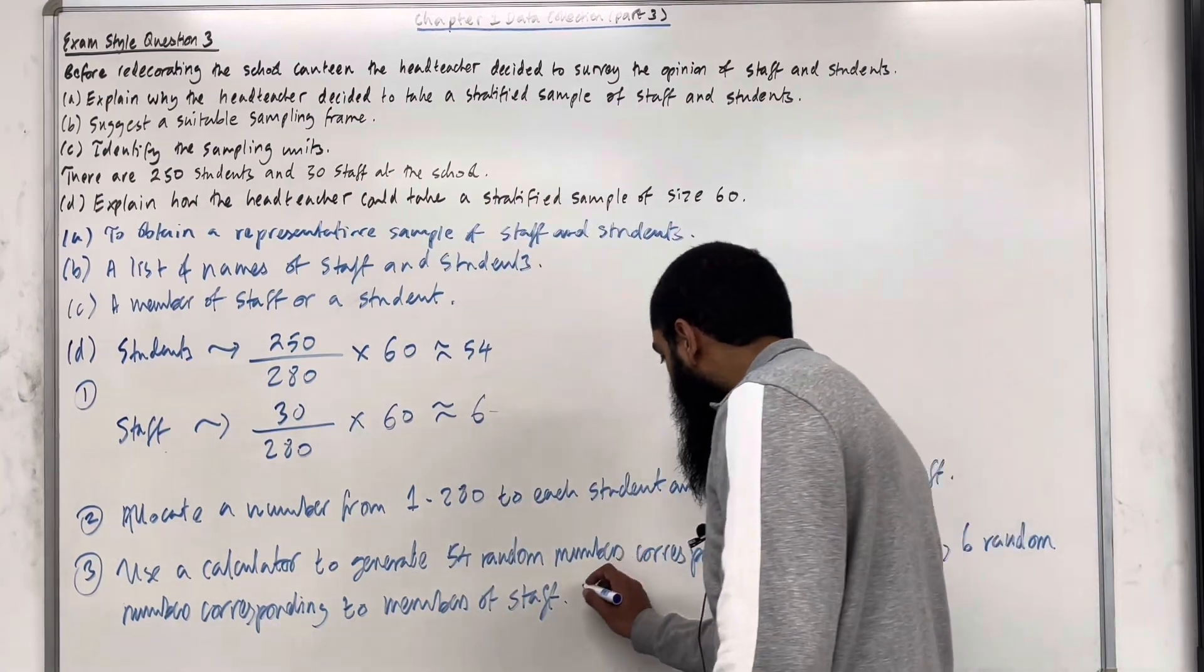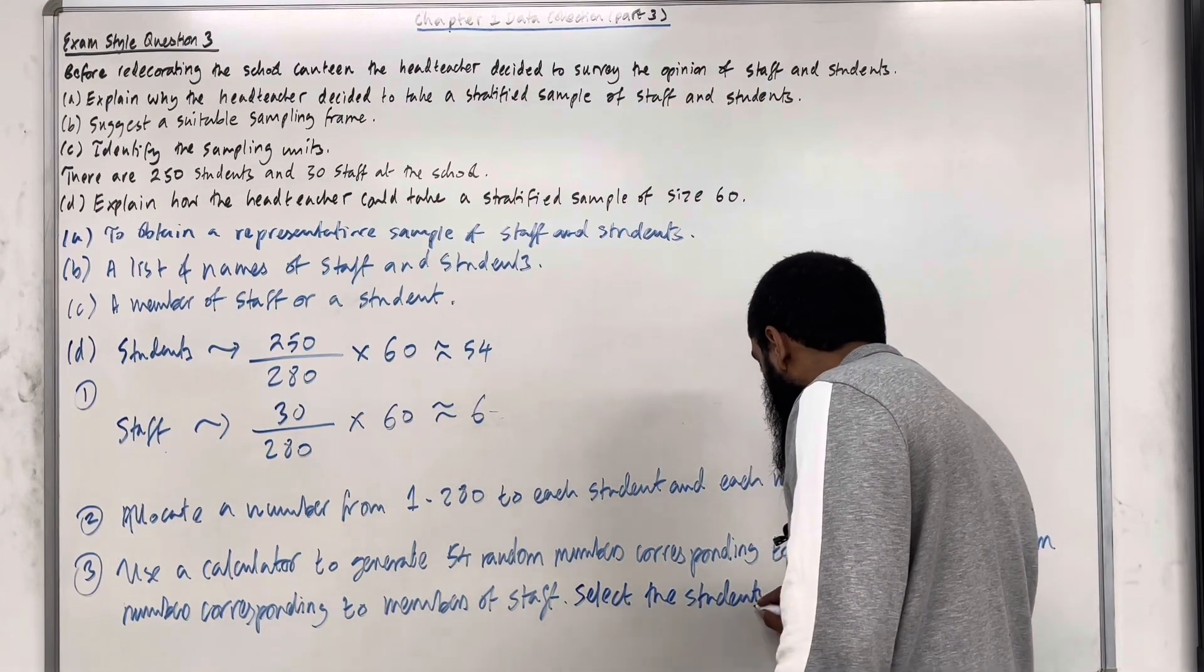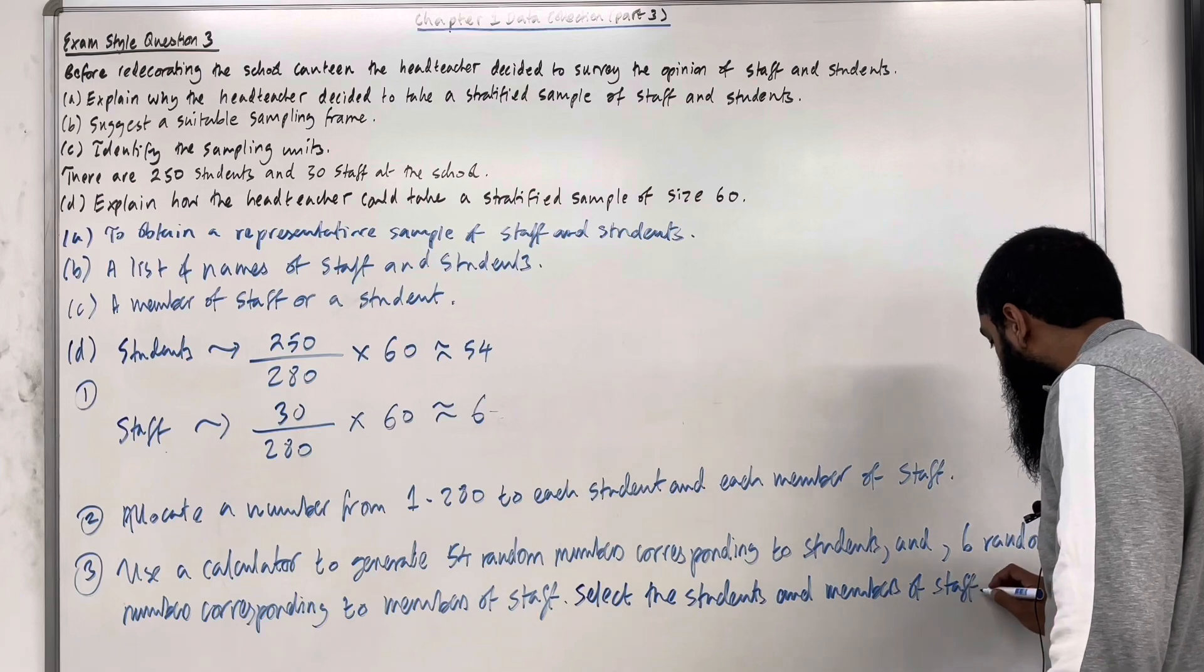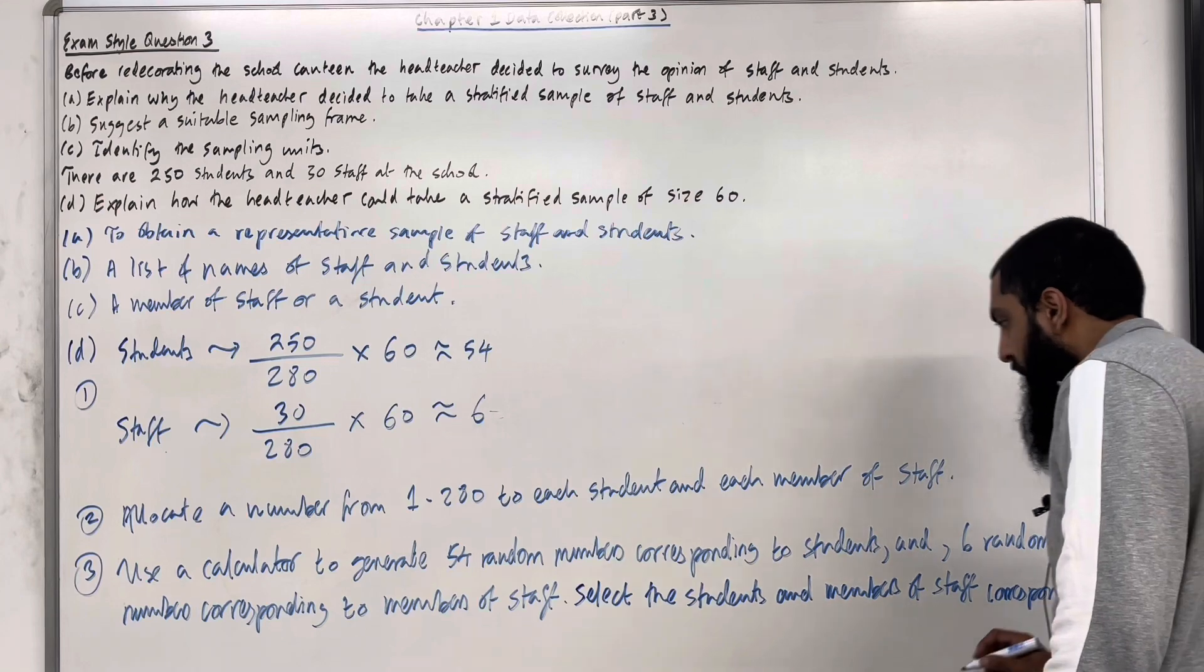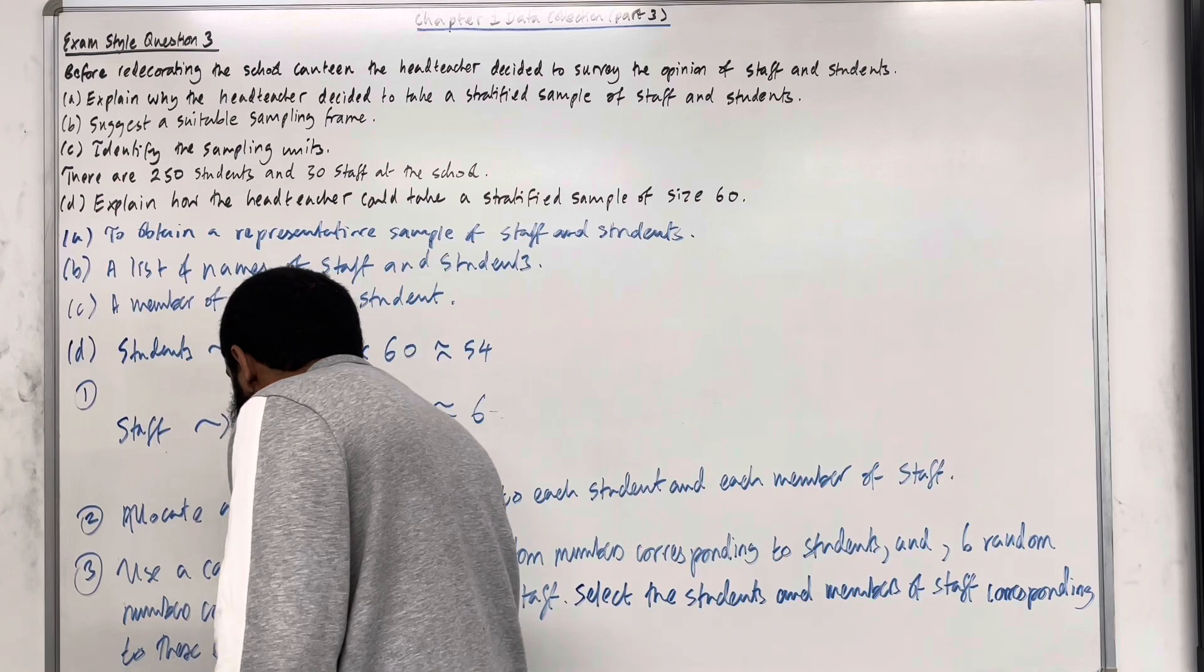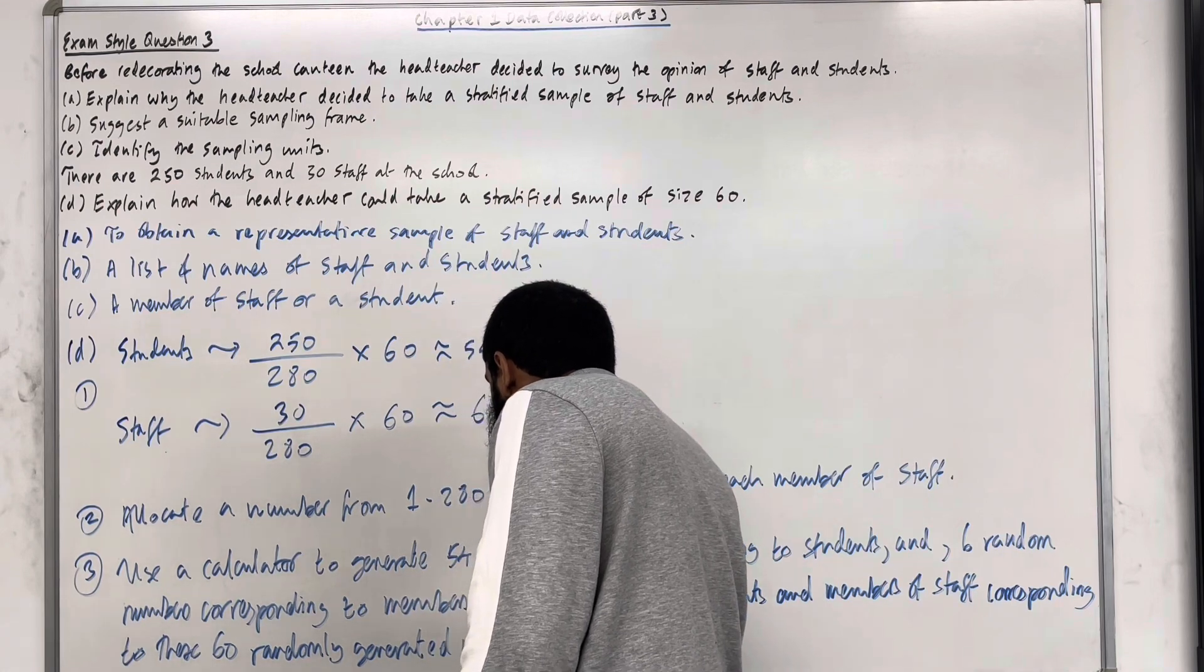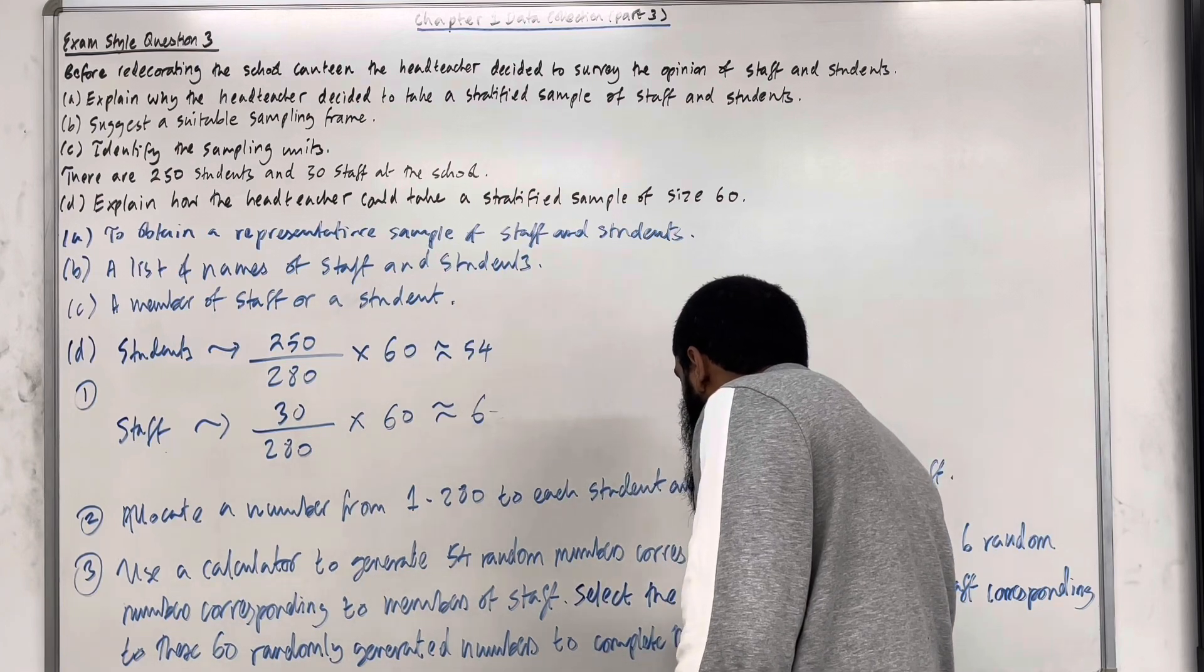Select the students and members of staff corresponding to these 60 randomly generated numbers to complete the survey.